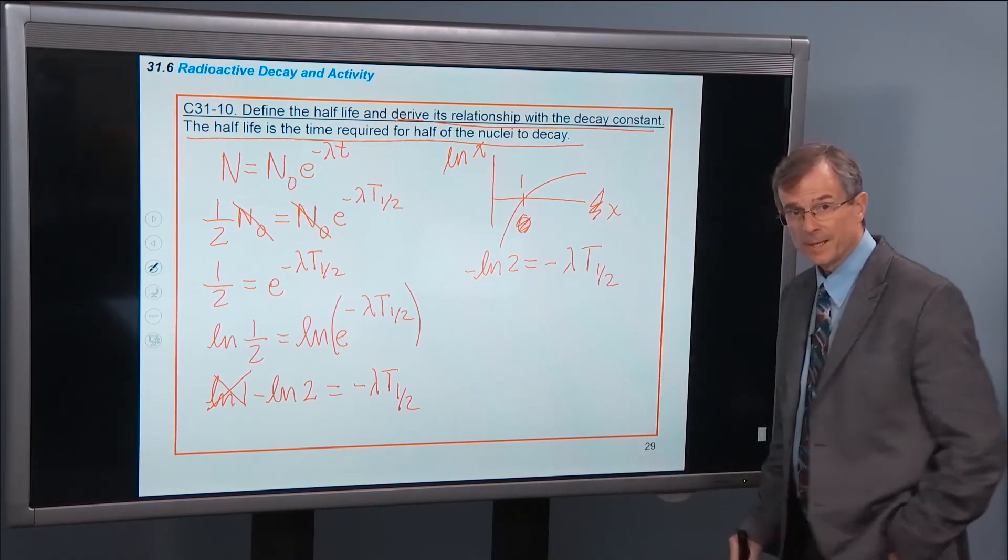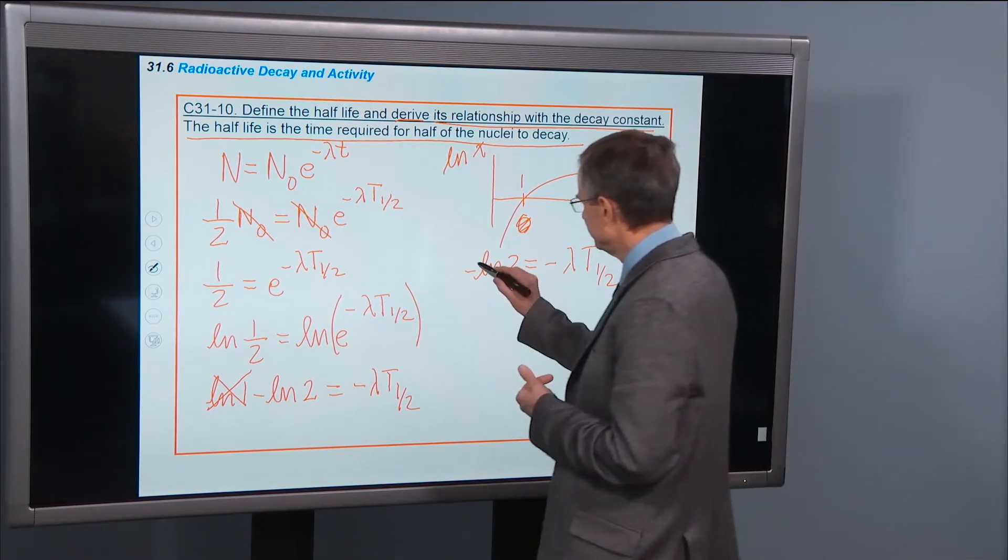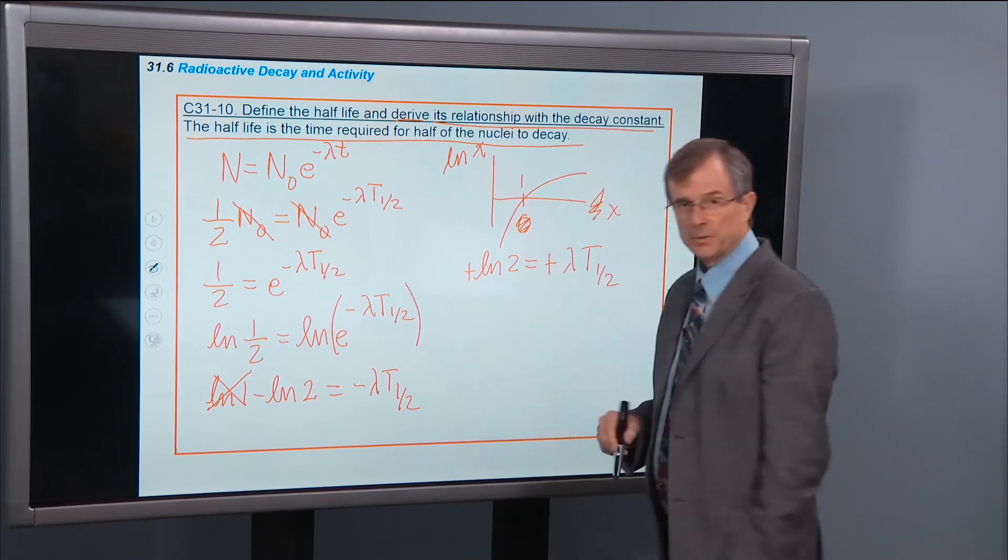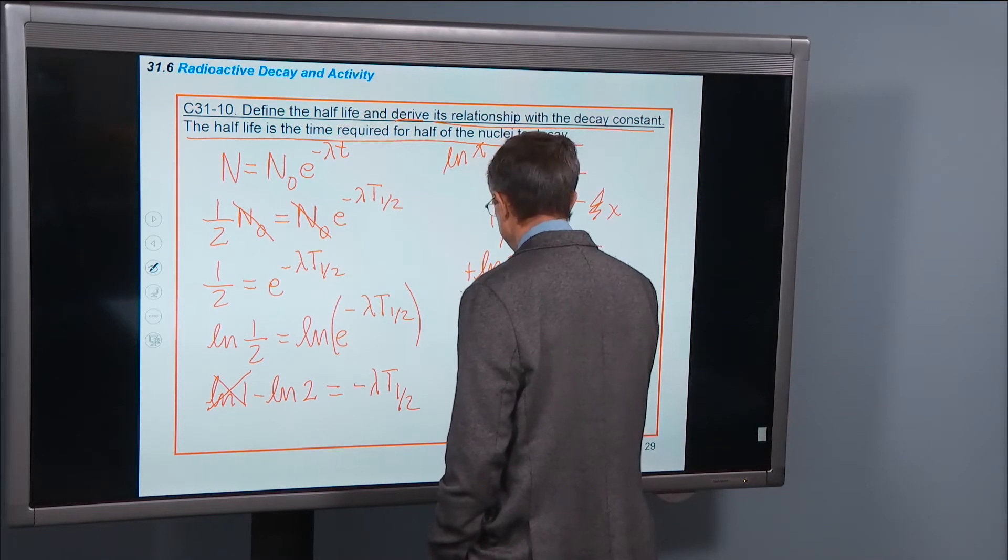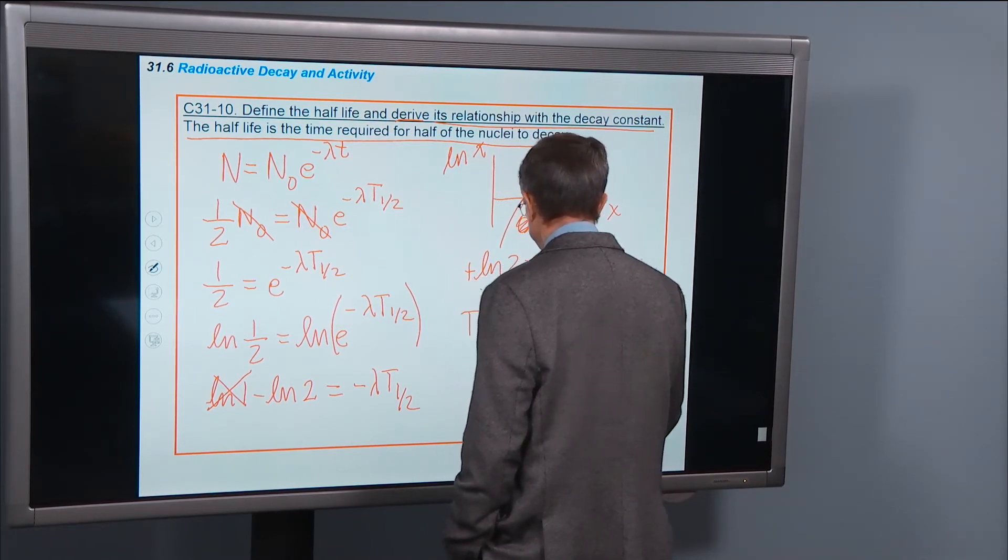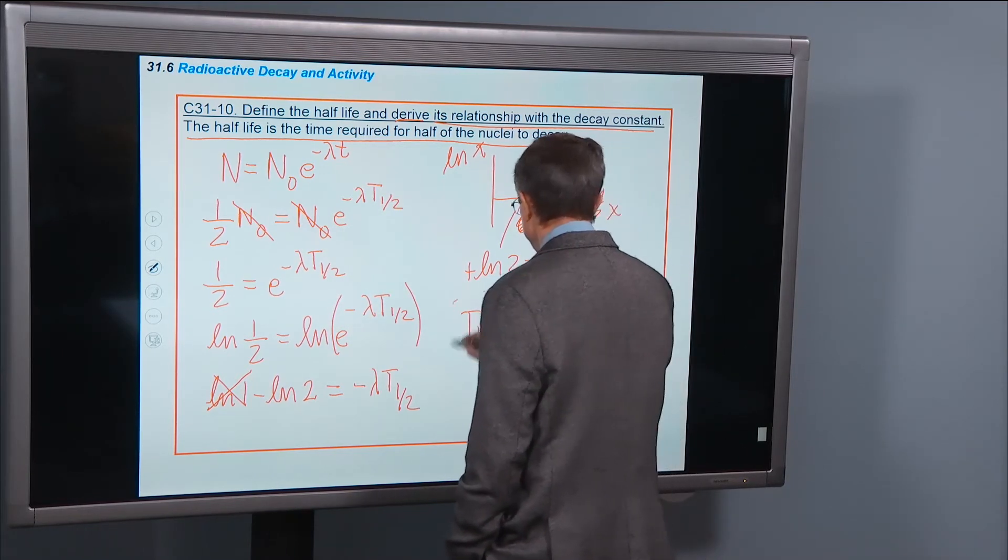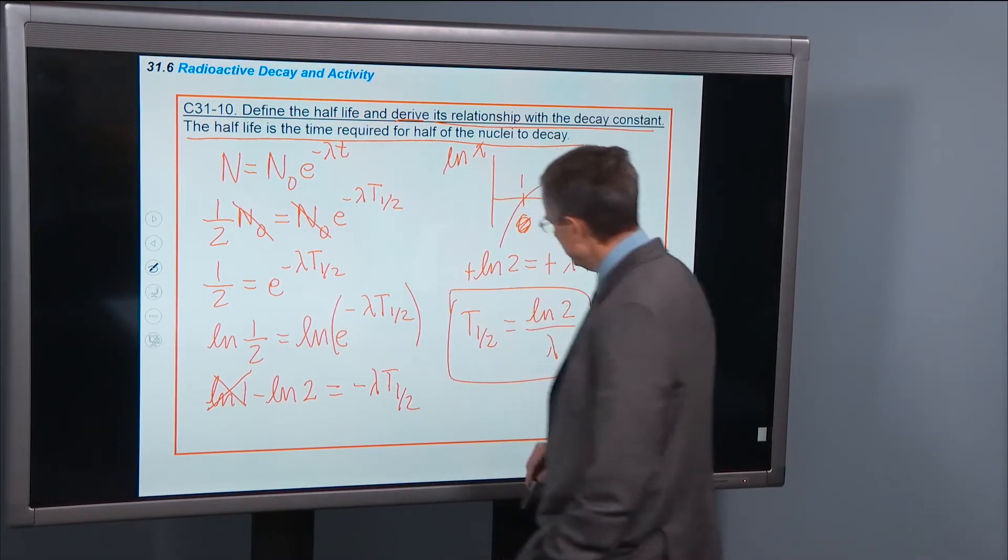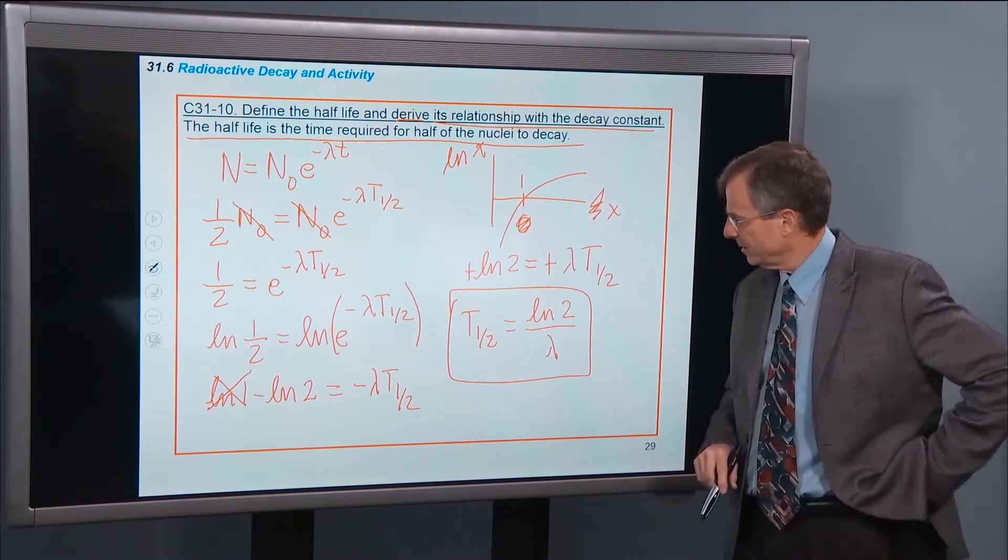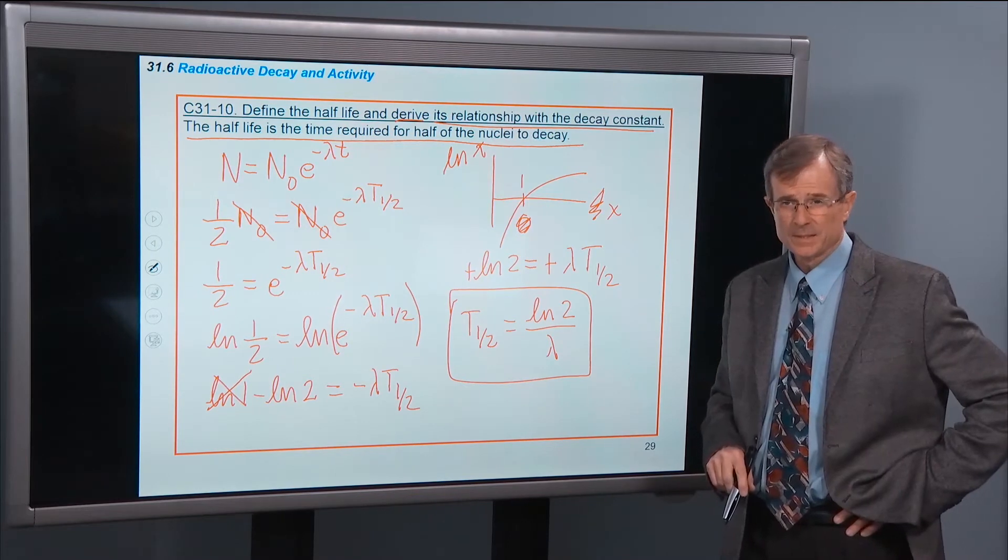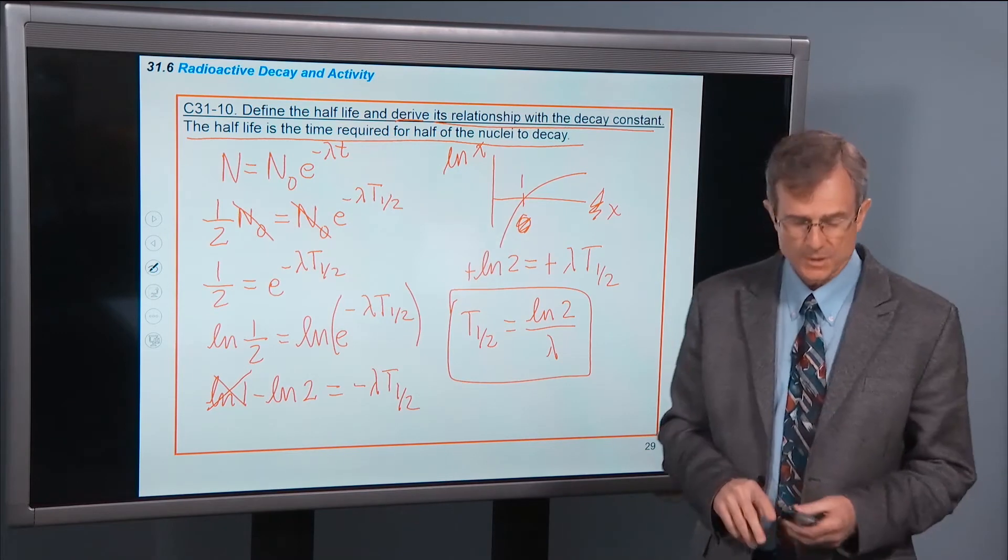Because I can multiply both sides of this equation by a negative 1, and convert those negatives to positive, and I can solve for t 1 half. And that is the relationship between the half-life and the decay constant. So if you tell me one, I can tell you the other using this relationship.